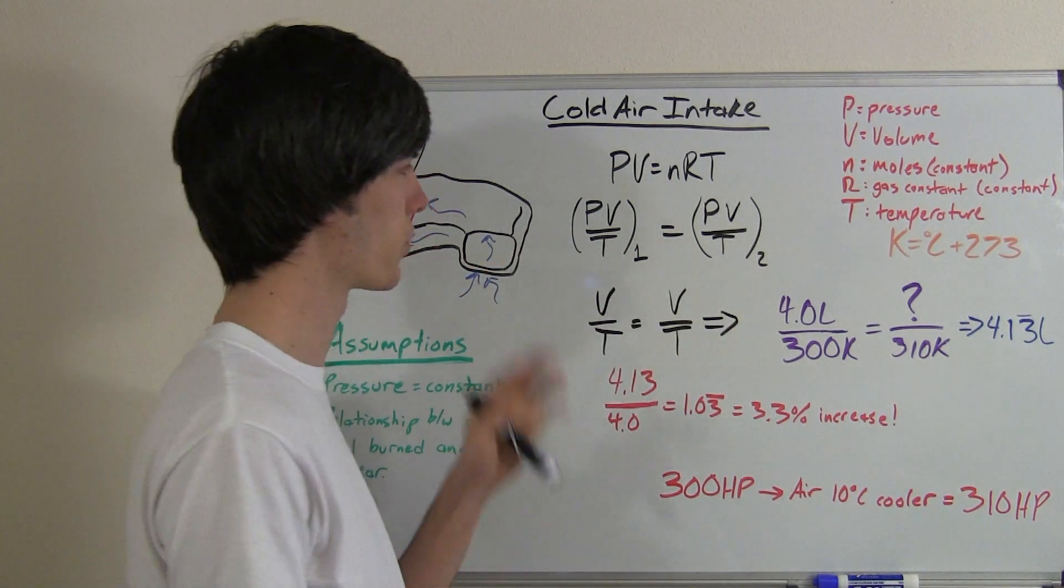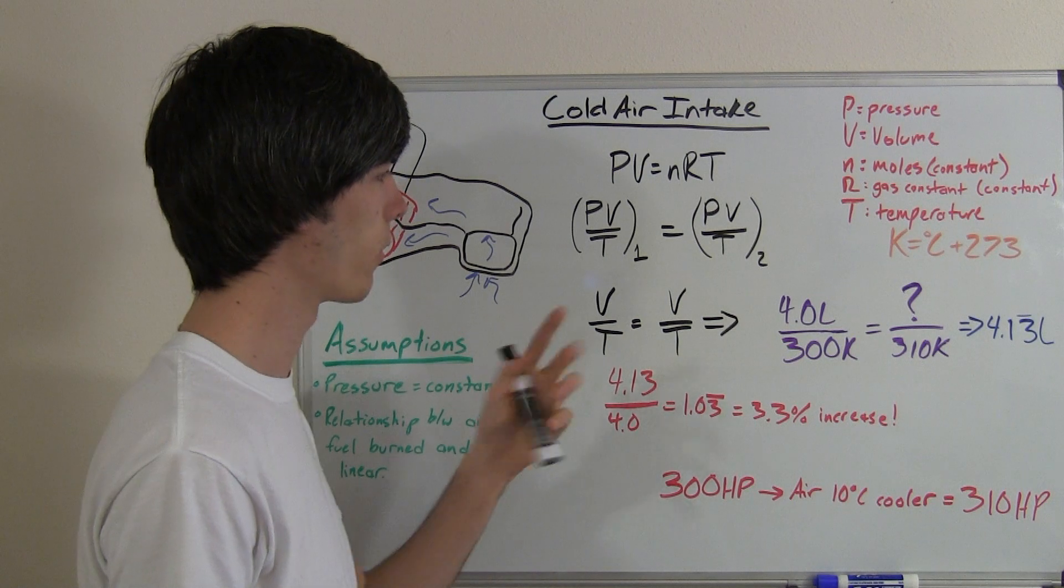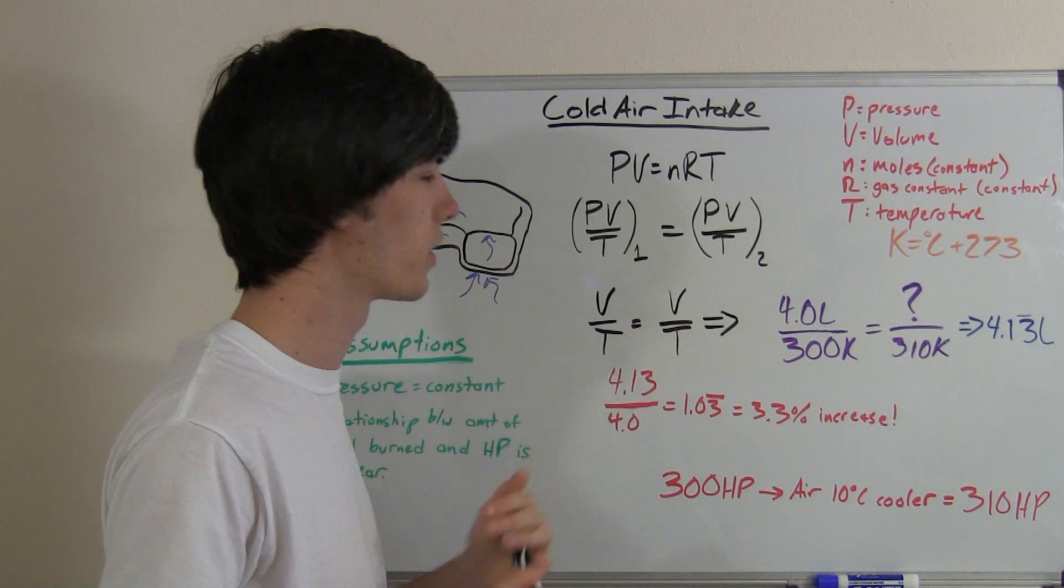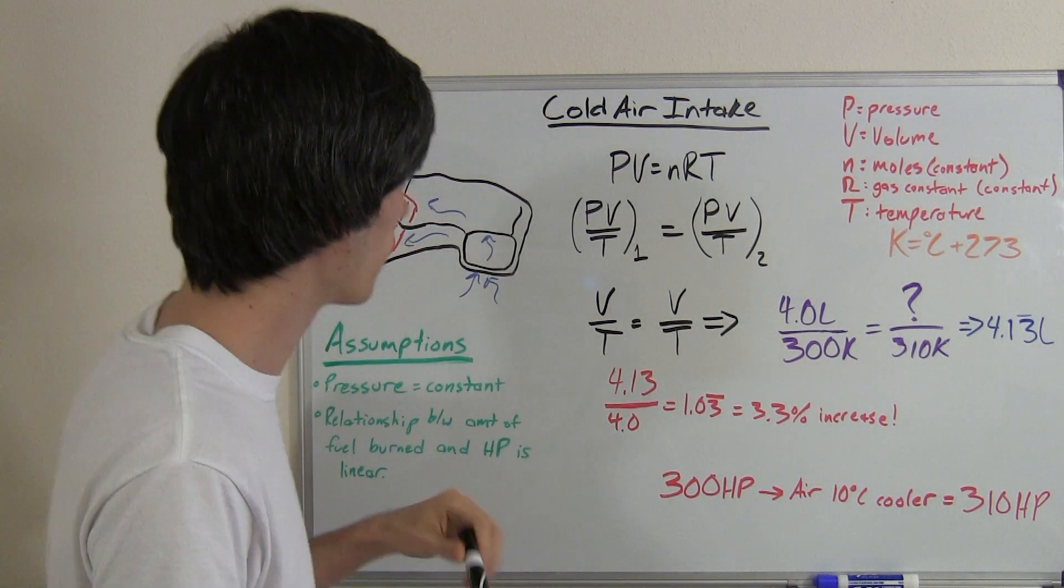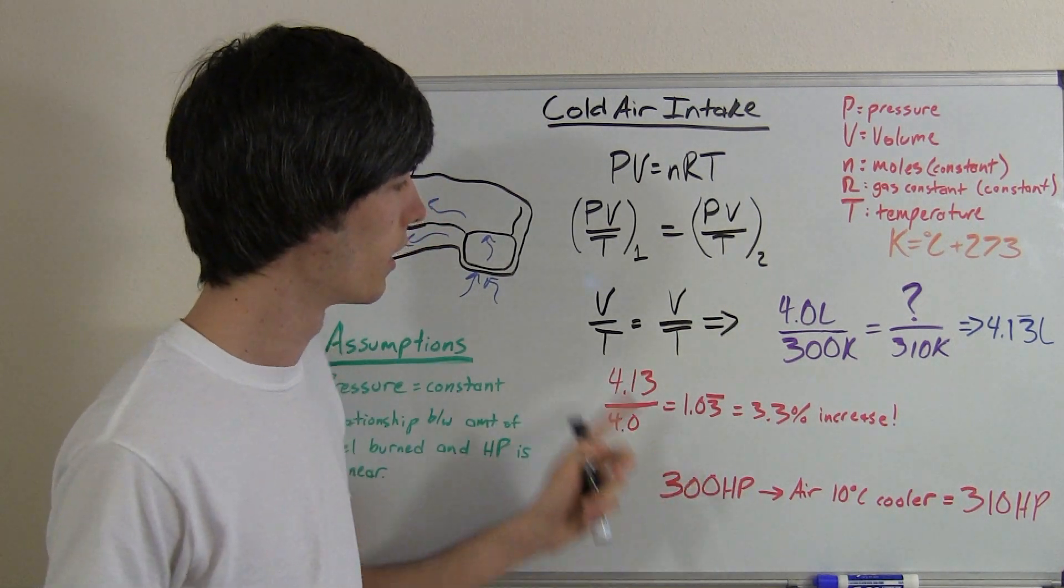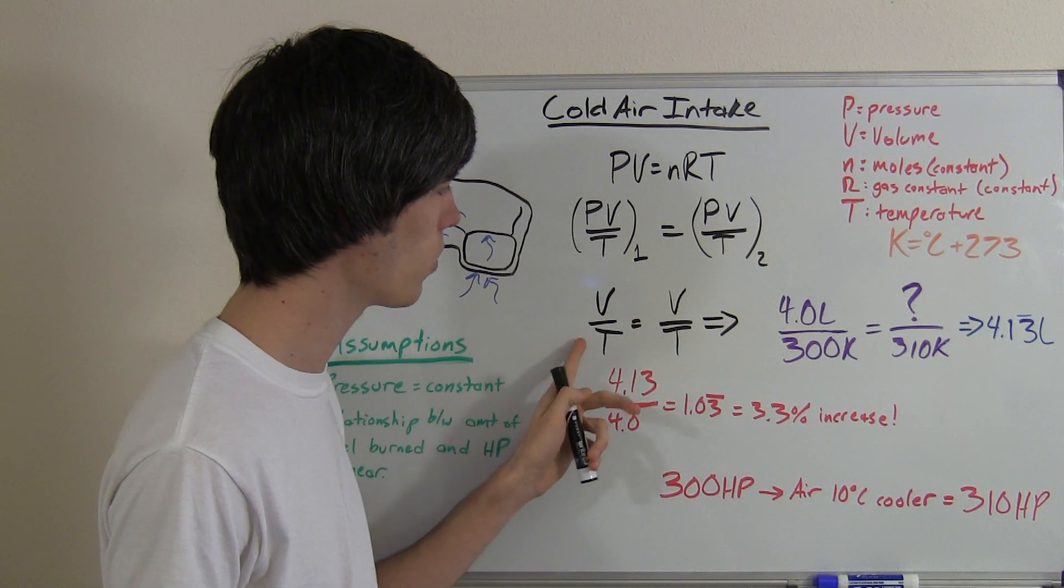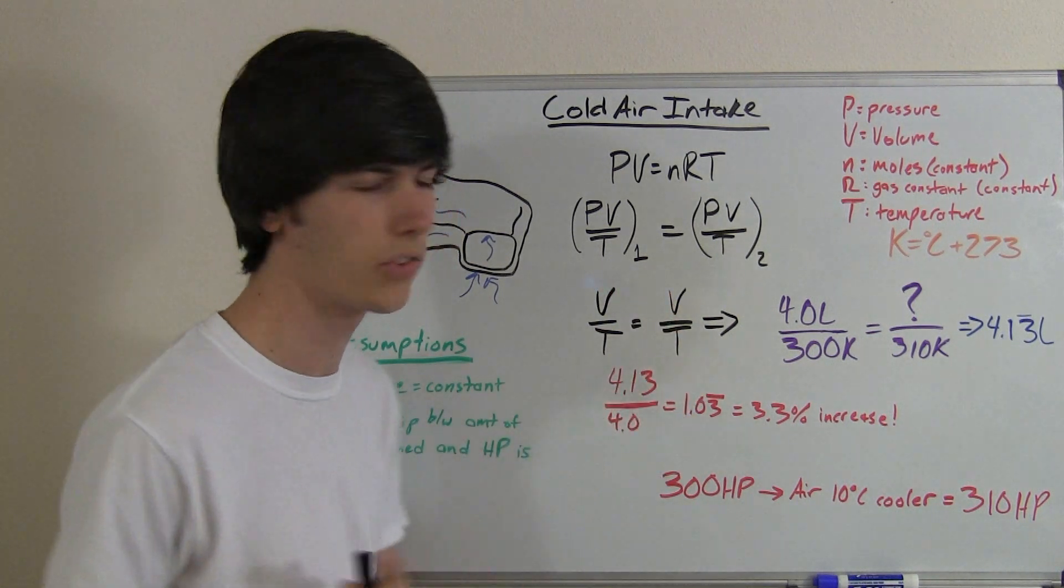Now, for our example, we're just going to say that pressure is constant. That way it makes it pretty easy to see how changing the temperature affects the amount of oxygen available. So now we've eliminated it down. So we've got volume over temperature of state 1 is equal to volume over temperature of state 2.